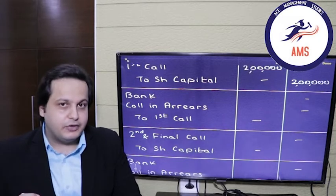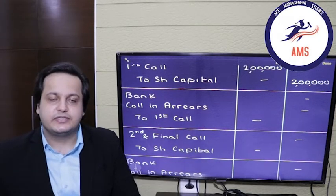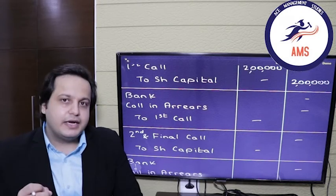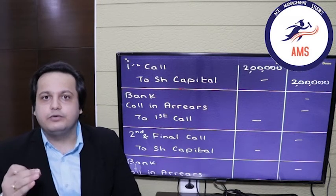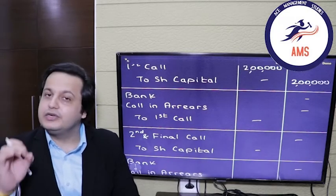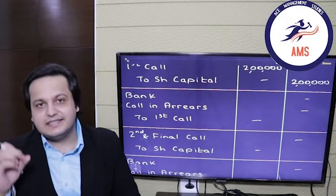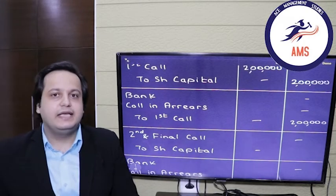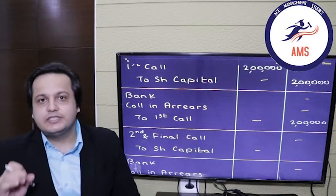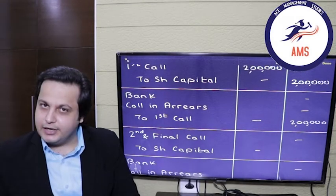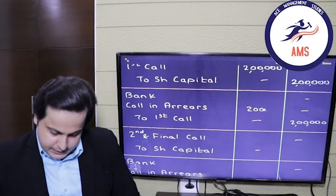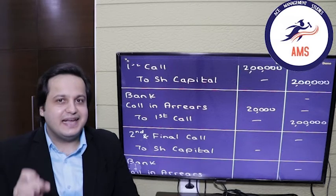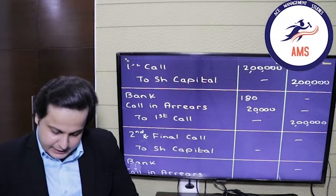Now the payment entry: bank account debit, call-in arrears account debit, to first call credit. Since we are using the first method, we credit the first call with the entire amount made due — that is 2 lakh rupees. Call-in arrears account is debited by 20,000 rupees (the default amount). Since 20,000 is the default, we receive only the balance amount: bank account debited by rupees 1 lakh 80,000.